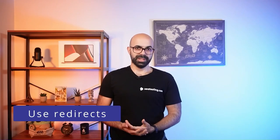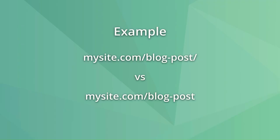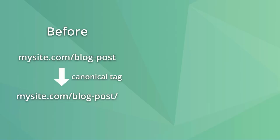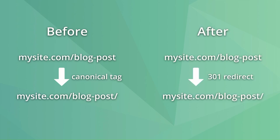Sometimes websites use canonical tags on URLs that are too similar and don't even need to be accessible. An example would be pages with a trailing slash versus pages without. Usually the contents on these pages are exactly the same, and it's a matter of preference for the site owner to use one or the other. So instead of using a canonical tag pointing to the preferred URL version, you can use a 301 redirect, making the non-preferred URL completely inaccessible to users and search engines.